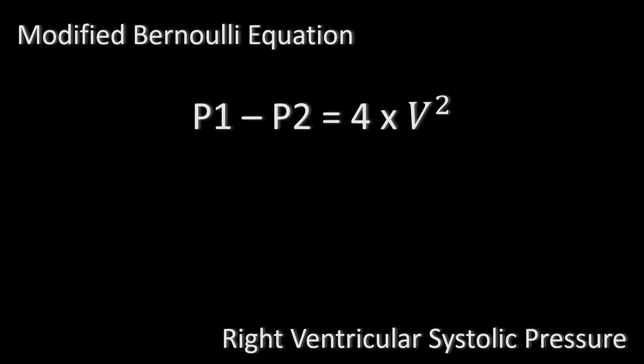The right ventricular systolic pressure can be estimated using the modified Bernoulli equation, which is the following. The pressure difference between two chambers equals 4 times V squared, where V is the velocity of a regurgitant jet between the two chambers. We will use the modified Bernoulli equation for the tricuspid regurgitation jet, so 4V² is the gradient between the right ventricle and the right atrium. With simple math, the same equation becomes P1 equals 4V² plus P2.